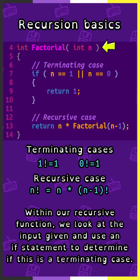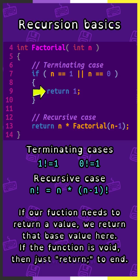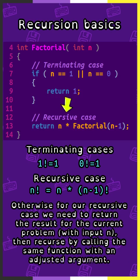Within our recursive function, we look at the input given and use an if statement to determine if this is a terminating case. If our function needs to return a value, we return that base value here, or if the function is void, we just use return to end. Otherwise, for our recursive case, we need to return the result for the current problem with input n, and then recurse by calling the same function with an adjusted argument, so changing n's value.